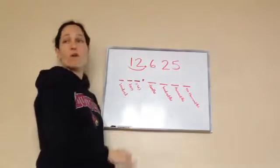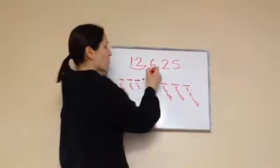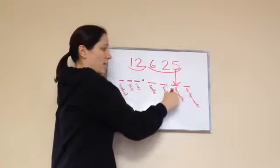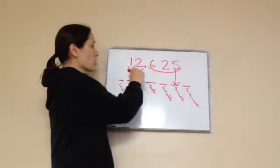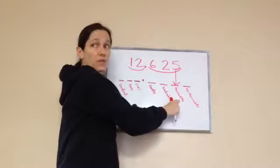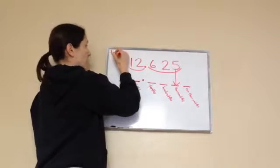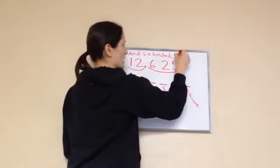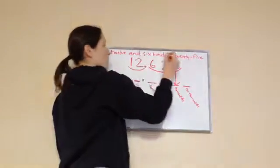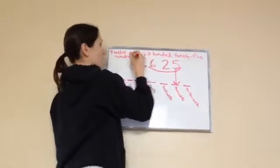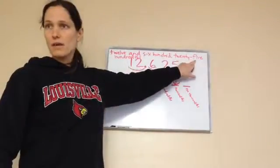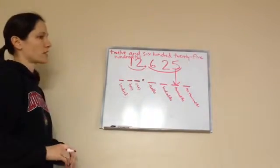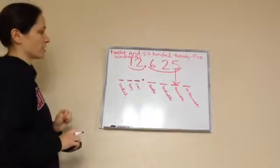The number is 12.625. Here's how you say it: whatever is before the decimal is twelve, then you say 'and,' then you read the decimal part — six hundred twenty-five — and whatever place the number ends on is what you say last. So this is 'twelve and six hundred twenty-five thousandths.' Remember, twenty-five gets a dash: twenty-five.